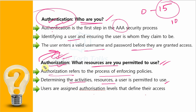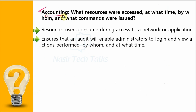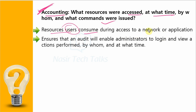Authentication just checks user credential validity, and authorization controls activity and power. Then comes Accounting. Accounting tracks: what resources were accessed, at what time, by whom, and what commands were used. Accounting means — after authentication and authorization — tracking what resources were used during access to the network or application. It ensures that an audit trail is available, enabling an administrator to log in and view actions performed by whom and at what time.